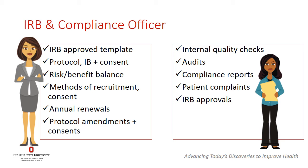The IRB will check and approve the IRB-approved template, protocol, investigator brochure, and consent, as well as the risk and benefit balance inclusion in the document, methods of recruitment and consent by the site, annual renewals of the documents, and protocol amendments and consent. An institutional compliance officer varies a little bit in that they may conduct internal audits for quality checks, compliance reports, patient complaints, and IRB approvals as needed. These are two very important stakeholders in ensuring quality management across the consent process, making sure that the institution is upholding GCP requirements.